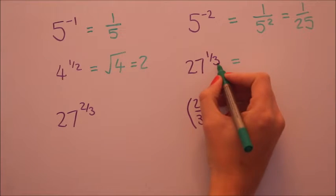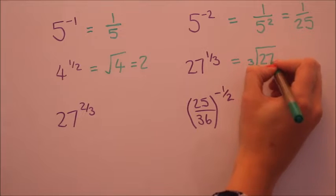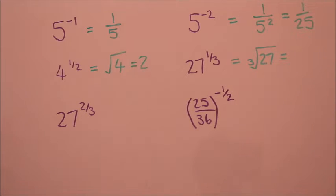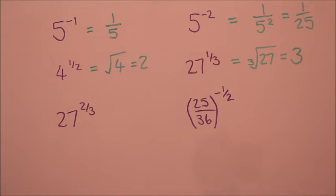Now because this one has a three on the bottom of the fraction it will be a cubic root and then we do write the three. So the cubic root of twenty seven is three. It's really useful actually if you can just know that one off by heart.